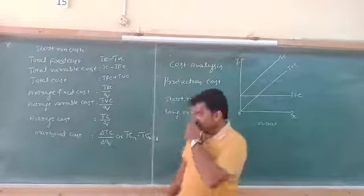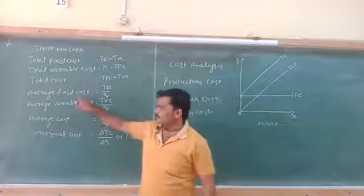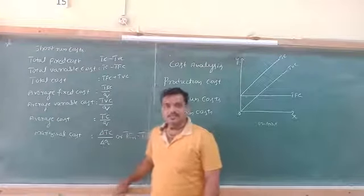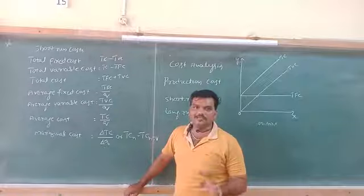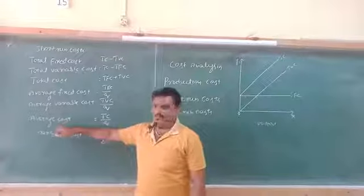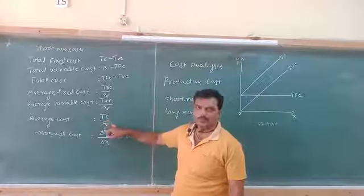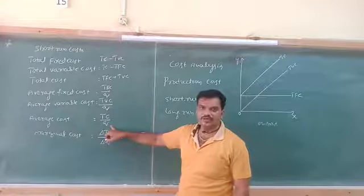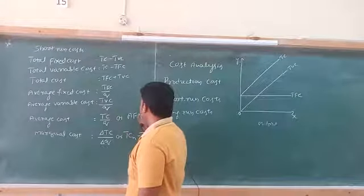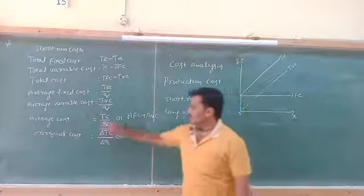Next is Average Cost (AC). Average Cost means the cost per unit of total cost of production. It can be calculated as TC divided by Q — total cost divided by units of input. We can also express it as AFC plus AVC. That is, AC = AFC + AVC.